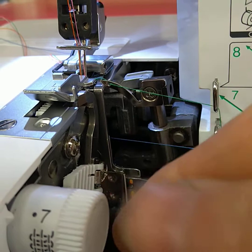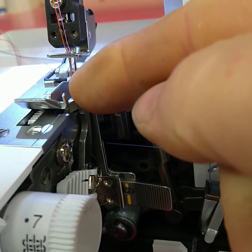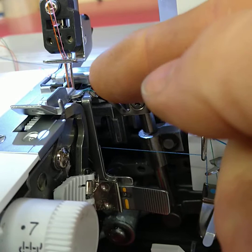Now the stitch width is controlled by this dial, and if we turn this dial we can see the blade move in and out. So the needles don't move in stitch width, just the blade, so you cut off more or less fabric to give you a wider or narrower stitch.